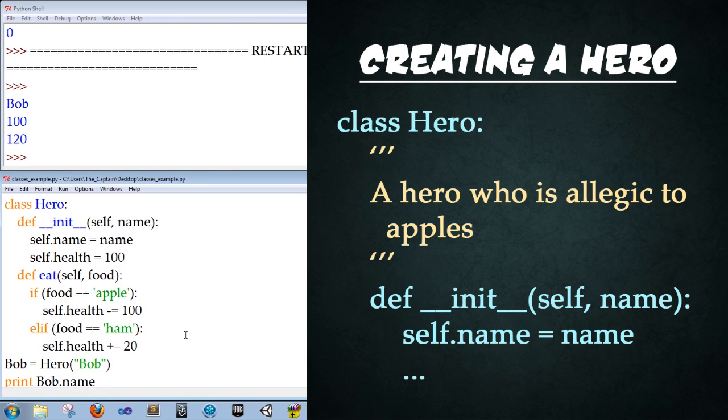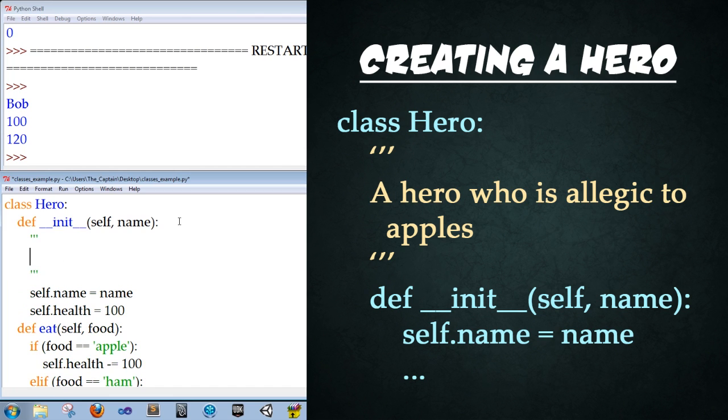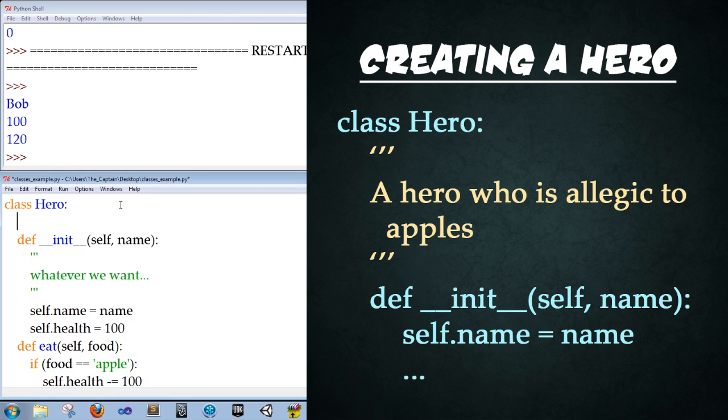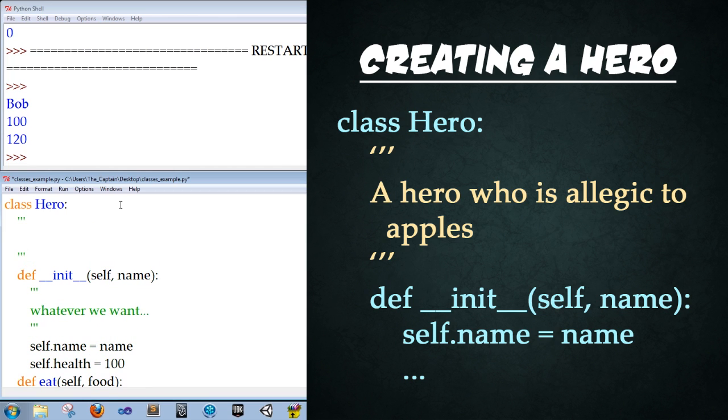All right. So we're going to wrap up this example by adding some documentation for the hero. Now, in other examples, we've had documentation be added to within the function, right here, by using triple quotations and then ending it. And we can punch in like whatever we want right here, right? You can also do that the same way for classes. So we're going to go ahead triple quote, enter, enter, triple quote, and then punch in whatever we want within here. So we're going to go ahead and punch in a quick string saying a hero who is allergic to apples. So this documentation is key because for any coders or anybody else creating instances of this down the road, they have this clarify what this class actually does.